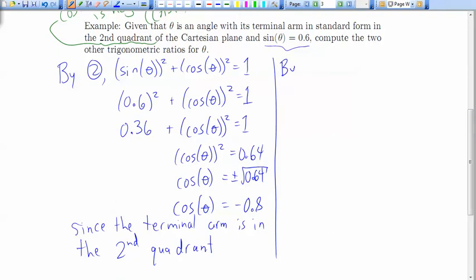So by the tangent ratio, we have that the tangent of this mystery angle theta is equal to sine theta over cos theta, and we know what sine theta is, it's 0.6. We know what cos theta is, it's negative 0.8.